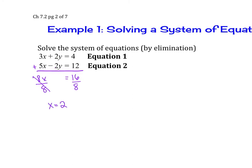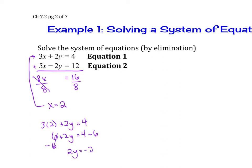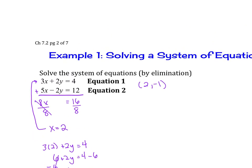We plug x back into one of the original equations to solve for y. Plugging into the top equation: 3 times 2 plus 2y equals 4, or 6 plus 2y equals 4. Subtract 6: we find 2y equals negative 2, divided by 2, so y equals negative 1. The solution to our system is (2, -1). This means if we were to graph both lines, they would intersect at the point (2, -1).